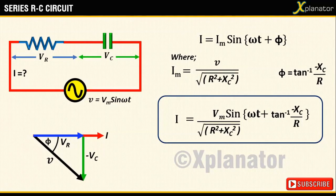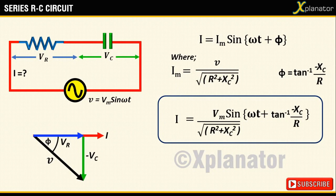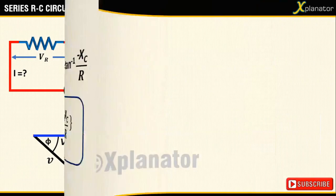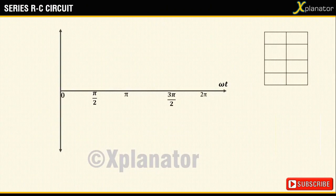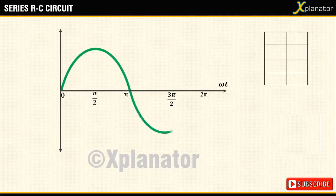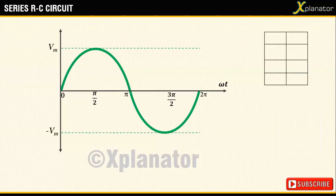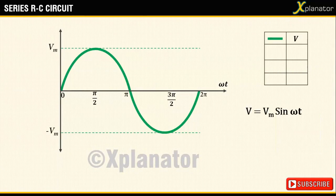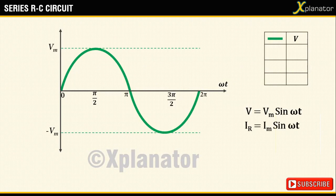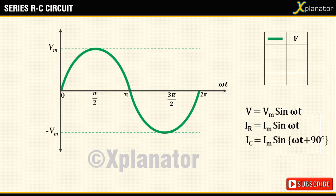Now that we have the equations for voltage and current, we can draw their waveforms. Draw the voltage waveform first. Before drawing the current in the series RC, for comparison, draw the current waveforms of resistor and capacitor as well.